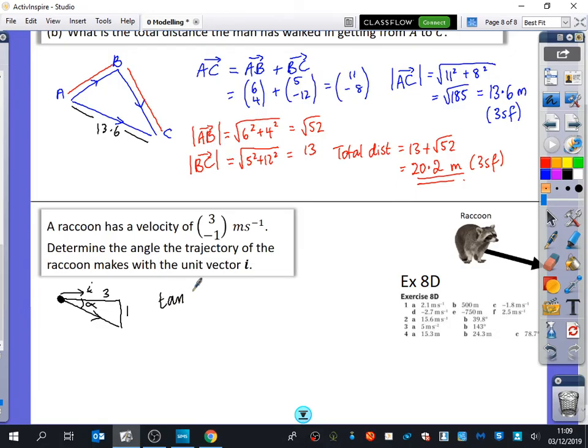And we know that tan alpha is the opposite over the adjacent. So alpha is either arctan or inverse tan of a third. Make sure I'm in the right mode. And I come with 18.4 degrees. But I think that answer needs a bit more detail.